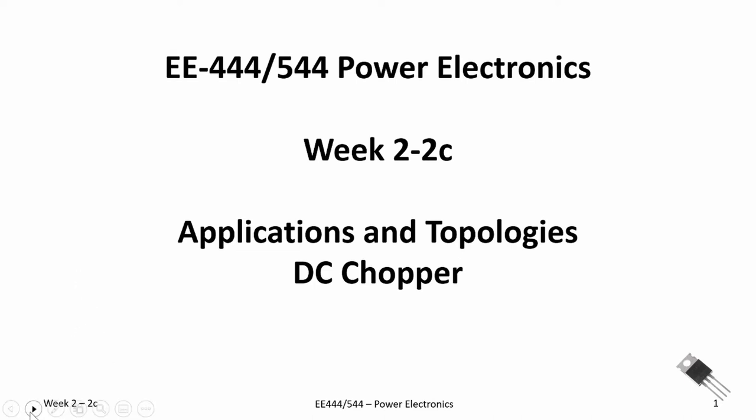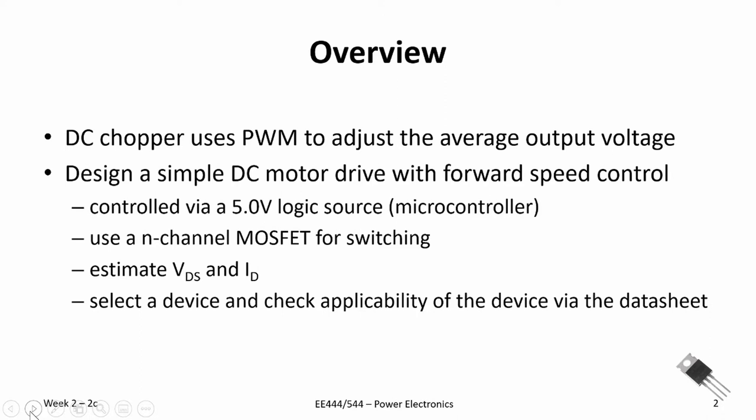Let's go over the overview of what we're going to do in this video. I'm going to split the video in two halves. In the first half I want to talk about PWM — pulse width modulation — and how we use that to adjust the average output voltage with a simple DC chopper circuit. Then I want to design a DC motor drive with forward speed control, where speed control is obtained by adjusting the average output voltage, using five-volt logic controlling an N-channel MOSFET. We'll look at drain-to-source voltage and drain current, then check the datasheet.